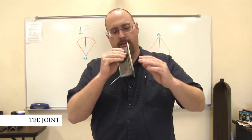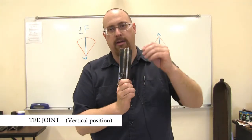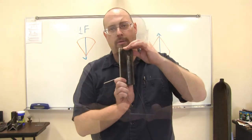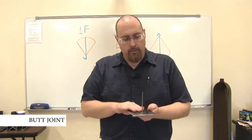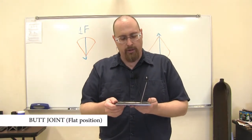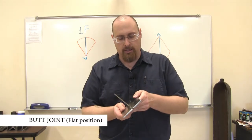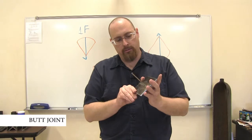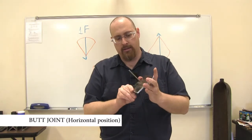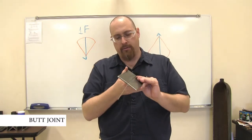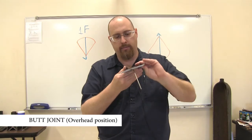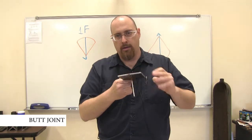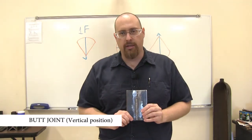And then our vertical once again is standing up anywhere like this. On our groove welds, we have our flat, where we're pointing straight down to the ground, and it can be from here to here. Then we have our horizontal like this, and then we have our overhead anywhere from here to here, and our vertical is going to be like that.